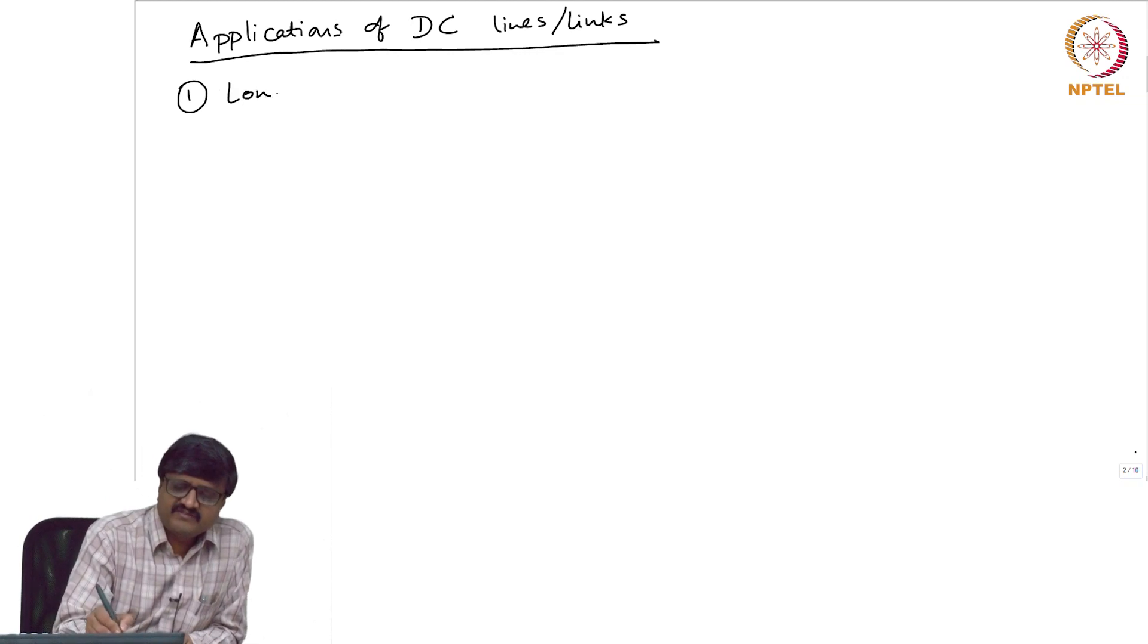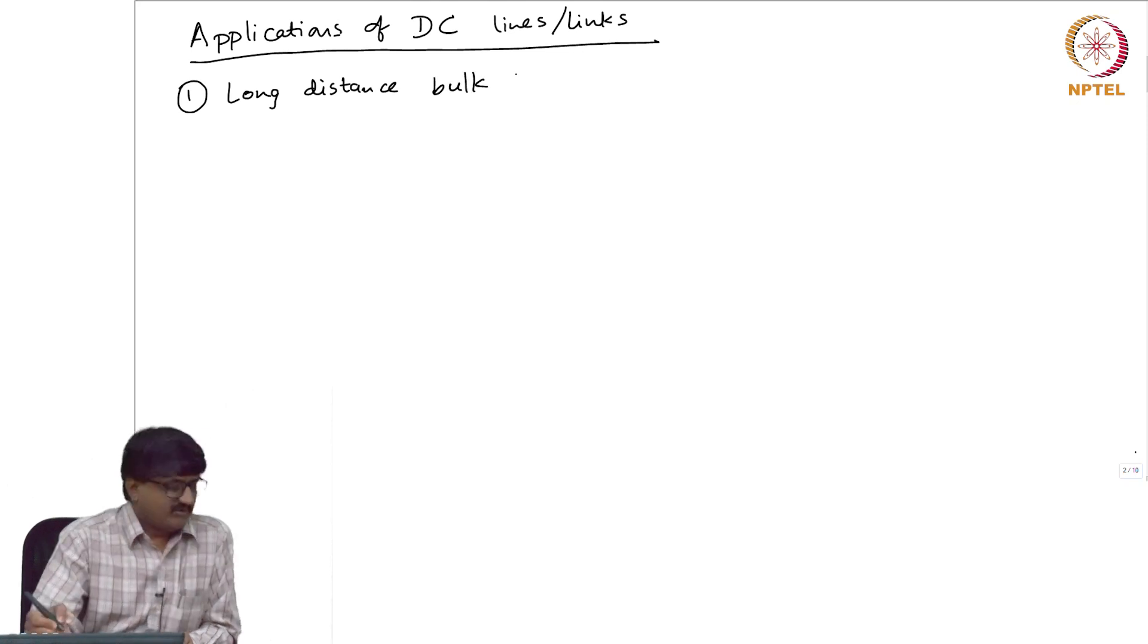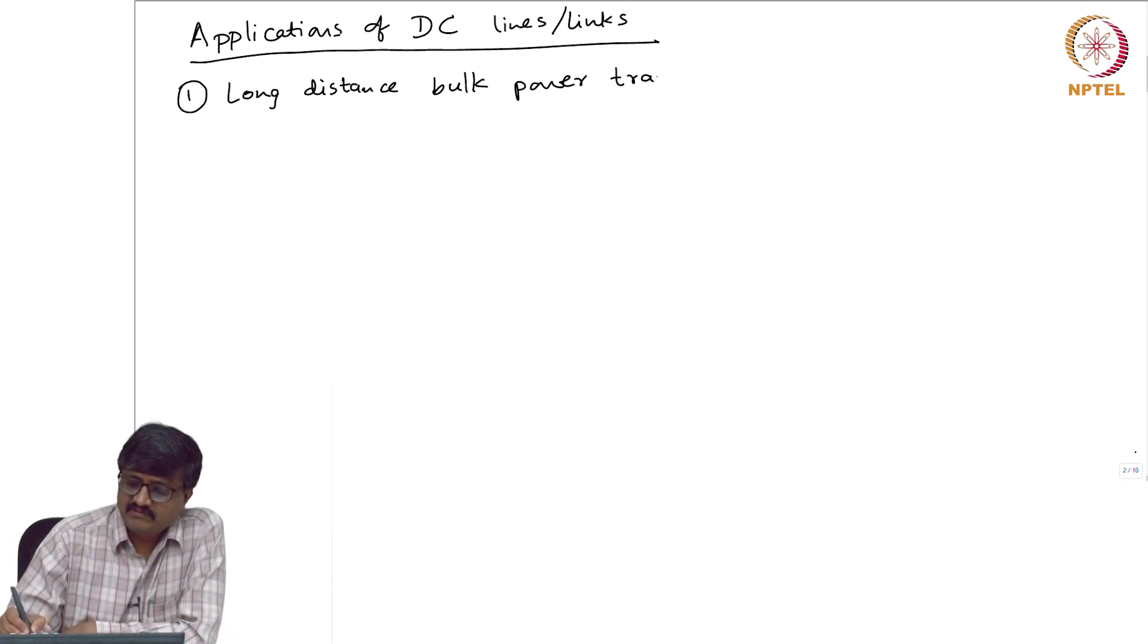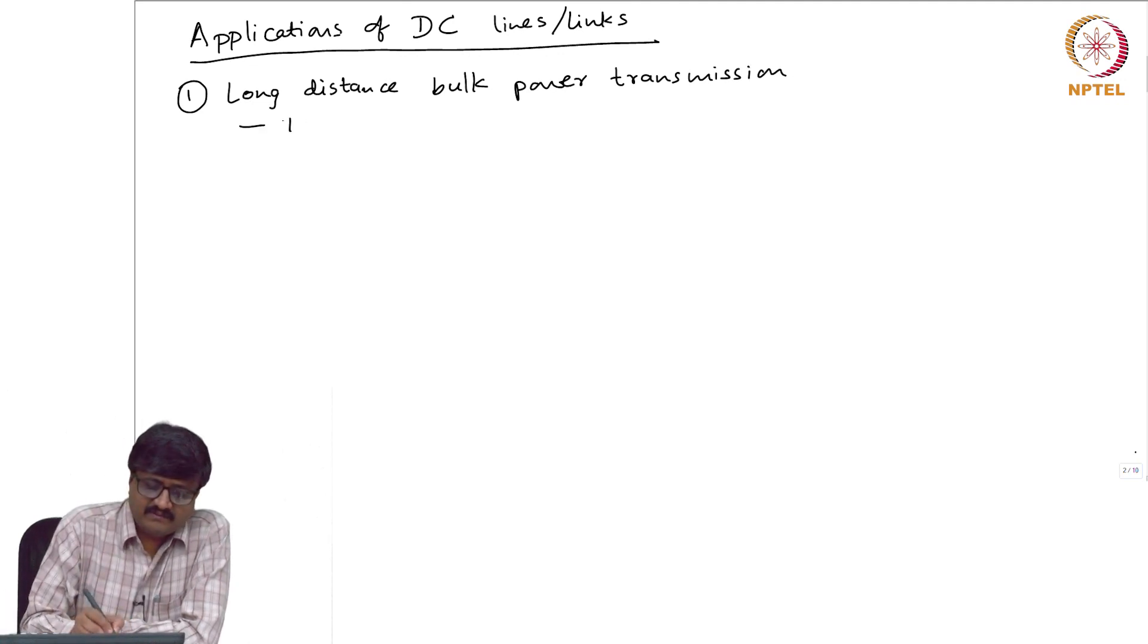Long distance bulk power transmission. Bulk power means a large amount of power. Then DC is economical.